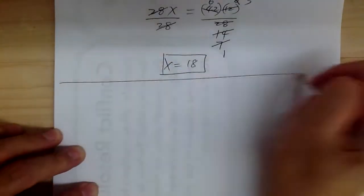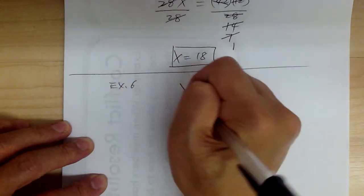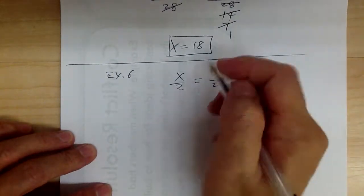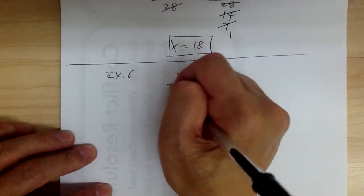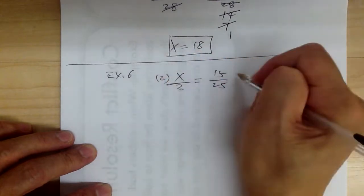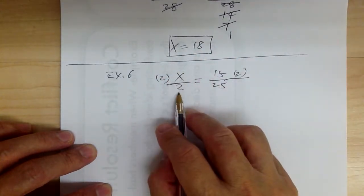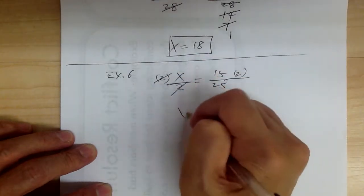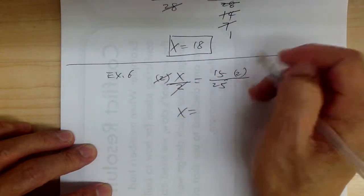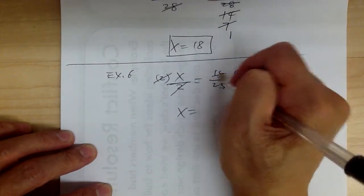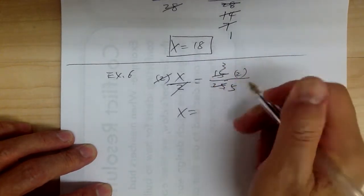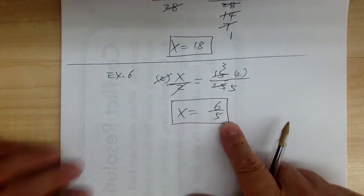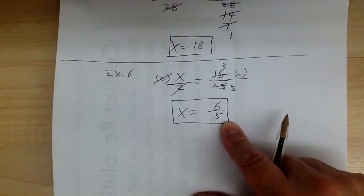Example 6: x over 2 equals 15 over 25. Since x is divided by 2, multiply both sides by 2. The 2s cancel. On the right side, 15 and 25 can be reduced by 5 to give 3 and 5. So x equals 6 over 5. Leave it as an improper fraction — don't waste time converting.